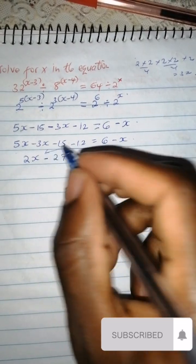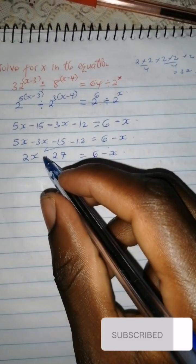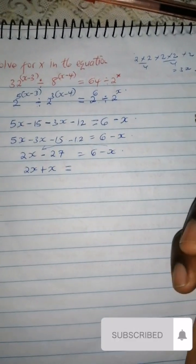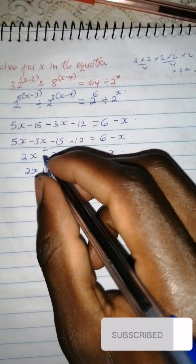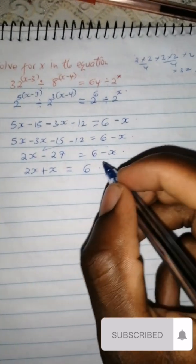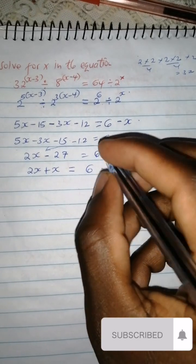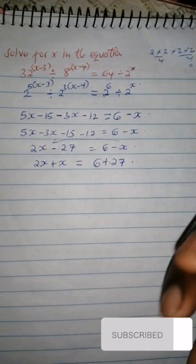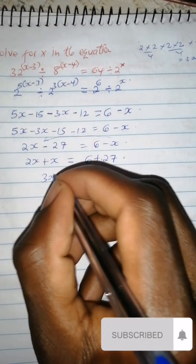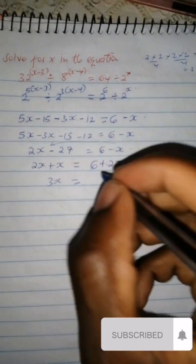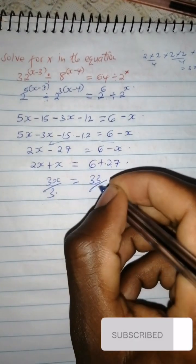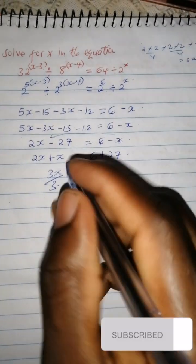We bring the negative x to the other side — it becomes positive x — and we bring negative 27 to the other side, so it becomes positive 27. So 2x plus x is 3x, equal to 27 plus 6, which is 33. Then we divide both sides by 3 to find the value of x.